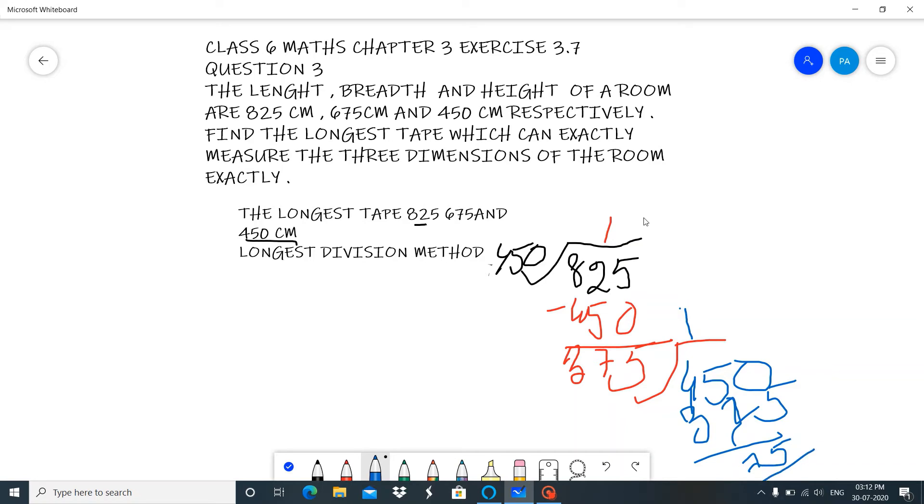Now, as you all know that when we do it by 75, 75 getting divided by 375, let's write over here 375 and over here 75. So, 75 is at the last. Many chances that this would be divisible. Let us take up 75, 3's or we can take 4's or 5. We are going to take 5 over here. With the 5, 75 times 5 is 375. So, 375 and 375 are cut. After doing these 450 and 825, we got our longest division as 75.